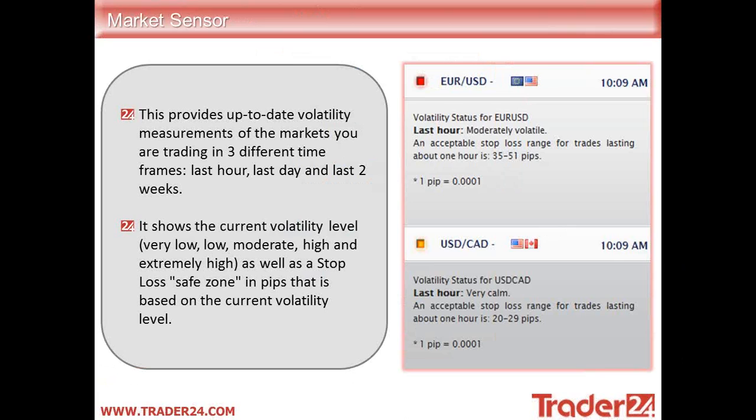The first screen is your market sensor, which provides up-to-date volatility measurements of the markets you're trading in three different time frames. It also shows you the volatility level and where you should look for a stop loss safe zone in pip status based on current volatility.